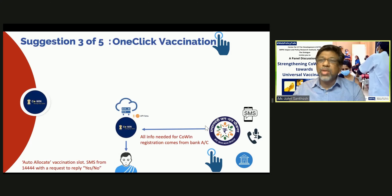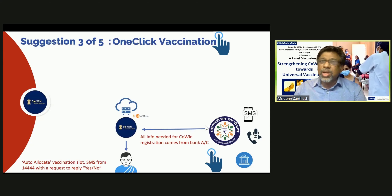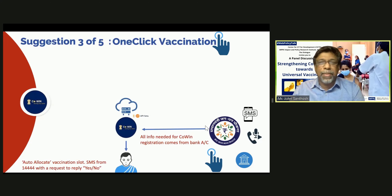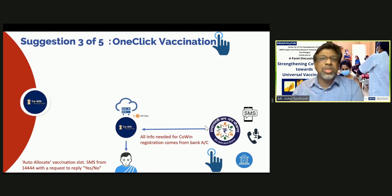And if we activate our 144 number, which is a two-way SMS chat, you can request the person: can you accept the slot within 24 hours? It's a nudge. And also say, within those 24 hours, if you accept it, it is a free vaccine.